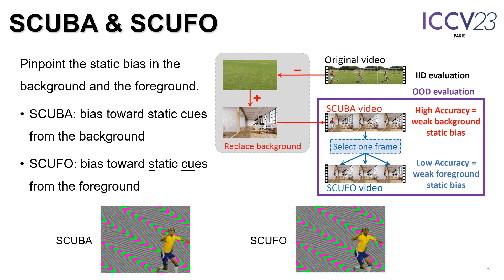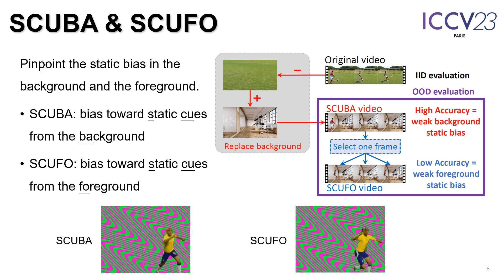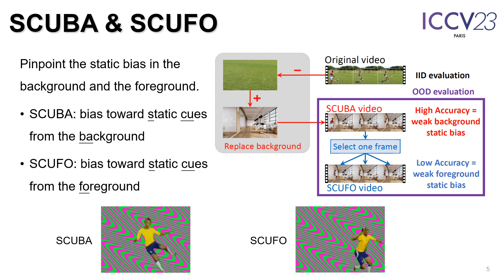To quantitatively evaluate and pinpoint static bias in the background and the foreground, we create two benchmarks: SCUBA and SCUFO. By replacing the background of an IID test video, we obtain a SCUBA video, on which high accuracy indicates weak background static bias. By selecting one frame and tiling it temporally into a static video, we obtain a SCUFO video with zero motion but identical static foreground. The action information must come from the static foreground, so low accuracy indicates weak foreground static bias.